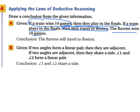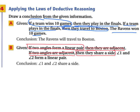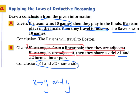Part B — Given: if two angles form a linear pair, then they are adjacent. If two angles are adjacent, then they share a side. Angle one and angle two form a linear pair. Since 'they are adjacent' is repeated as both conclusion and hypothesis, we can take the first hypothesis and last conclusion. Since angle one and angle two form a linear pair, we can state that angle one and angle two share a side, using the law of syllogism: if X then Y, and Y then Z, therefore if X then Z.